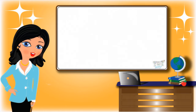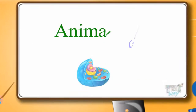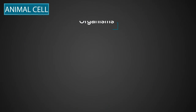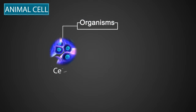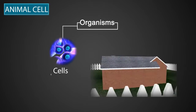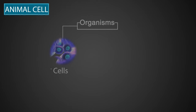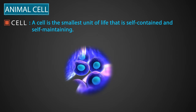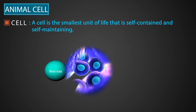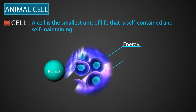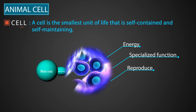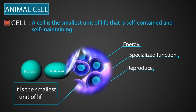Hi friends! Today, we will learn about animal cells. We know all organisms are made up of cells, like a house is made up of bricks. A cell is the smallest unit of life that is self-contained and self-maintaining. It can take in nutrients, convert these nutrients into energy, carry out specialized functions, and can also reproduce.